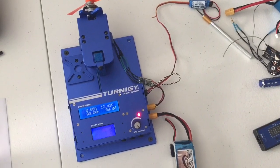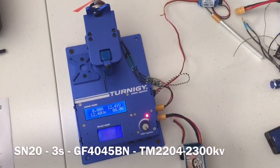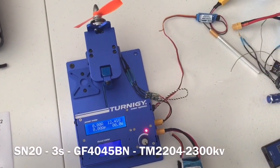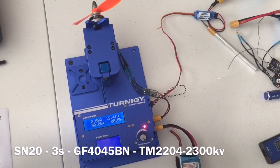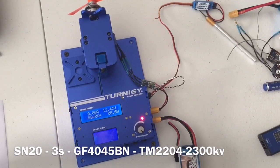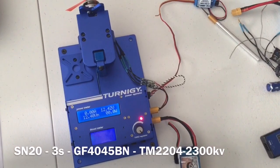So I'm going to do a quick test on a three cell battery. This is an SN20, a T-motor 2204, 2300 kV. And like I said, the SN20 straight out of the package, no changes.